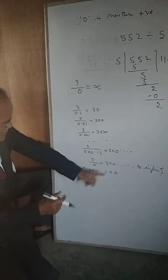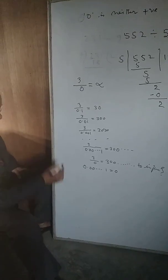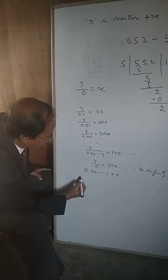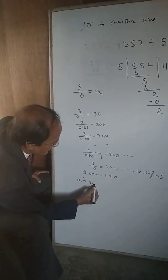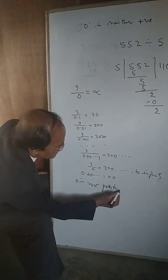Now zero point zero zero one becomes zero. So it shows that zero has something here. So zero is again positive. Zero is now a positive number.